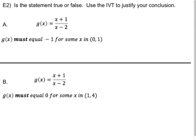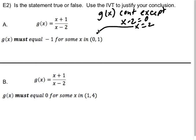So in E2, we're going to decide if the statement is true or false, and we're going to use the IVT to justify our conclusion. So in A, we're given g(x) equals (x + 1)/(x - 2). And we are asked if g(x) must equal negative 1 for some x in the window from (0, 1), which this time I did put parentheses correctly. So remember, if we want to use the IVT, we need to see if the IVT applies. So g(x) is continuous, except when the denominator equals zero, which would be at x equals 2. Thankfully, 2 is not in that interval. So it is continuous on [0, 1]. Check.